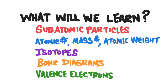First, we will learn the three subatomic particles that make up atoms: protons, neutrons, and electrons. Then we will learn the difference between atomic number, mass number, and atomic weight. We'll learn what isotopes are. And then we're going to learn how to represent the electrons of an atom using a Bohr diagram. And then we'll learn what valence electrons are, and how to show the valence electrons of an atom using an electron dot structure.